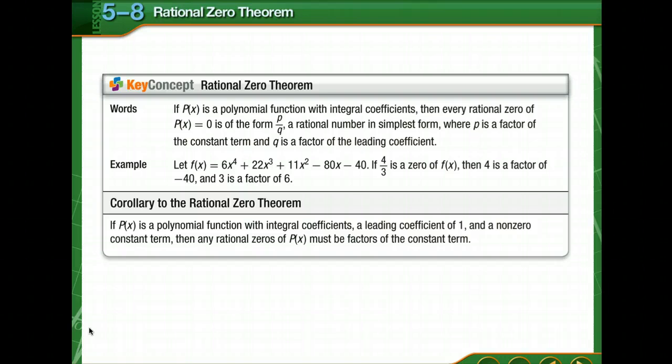Usually, it's not practical to test all possible zeros of a polynomial function using synthetic substitution. The rational zero theorem can help you choose some possible zeros to test. If the leading coefficient is one, this corollary applies.